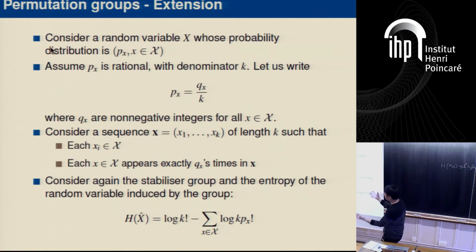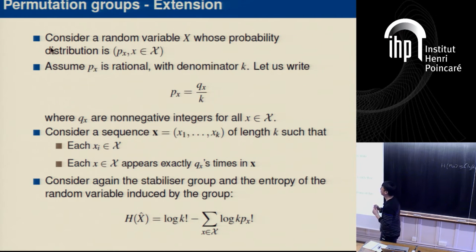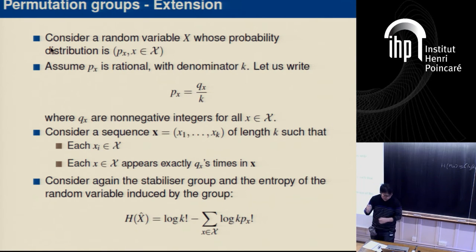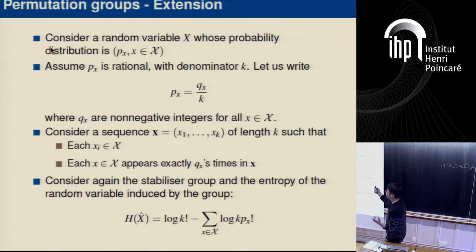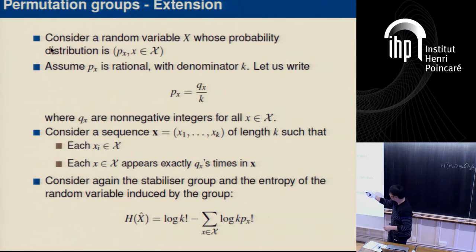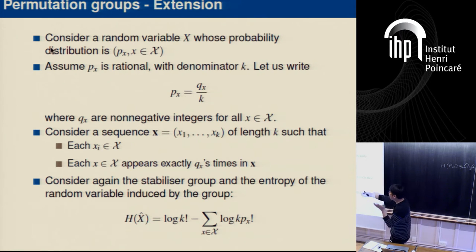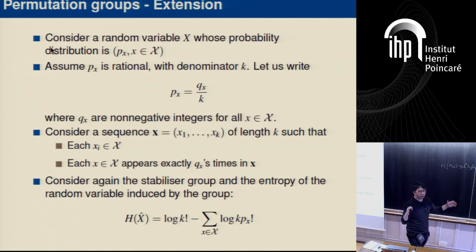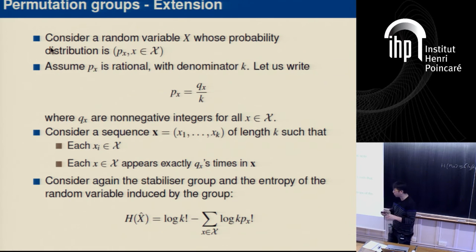Let's consider a very special sequence x1 to xk of length k. This sequence is not arbitrary: each element is from the alphabet of x, and the number of times x appears in the sequence equals qx. In this sense, you can think of this as the perfect scenario where the empirical distribution is exactly the same as the probability mass function.